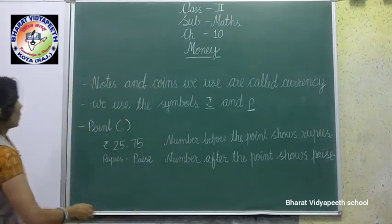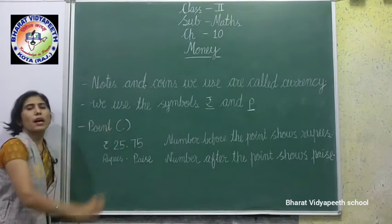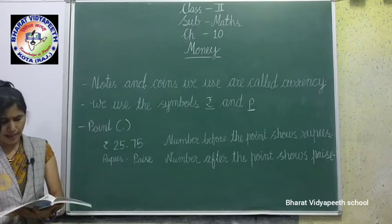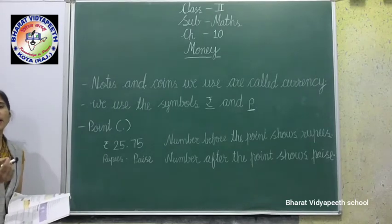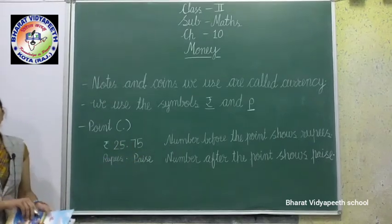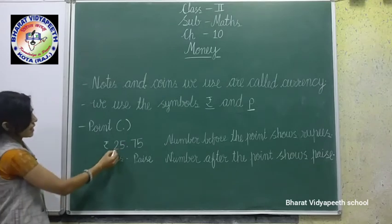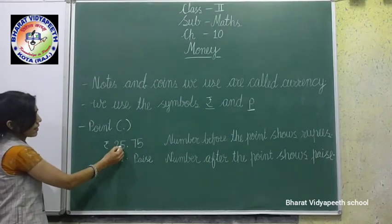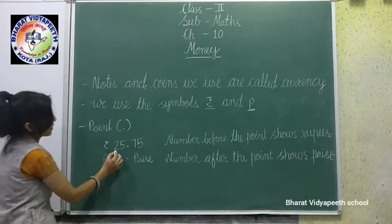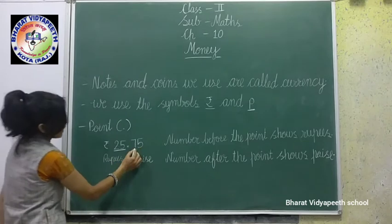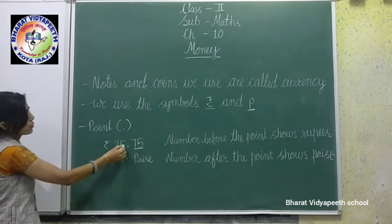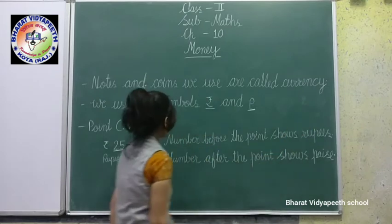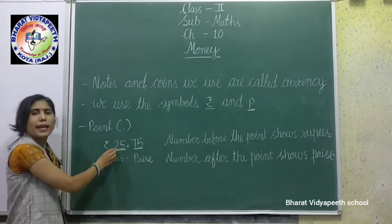Now, what is the point? We use a point to separate rupees and paise when writing figures. For example, 25.75 — 25 is rupees and 75 is paise. The number before the point shows rupees.